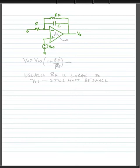Now at DC, our output voltage equals V offset times (1 plus RF over R). This prevents saturation by making the gain finite at DC. But usually RF is large, so offset is still a problem and still needs to be small.